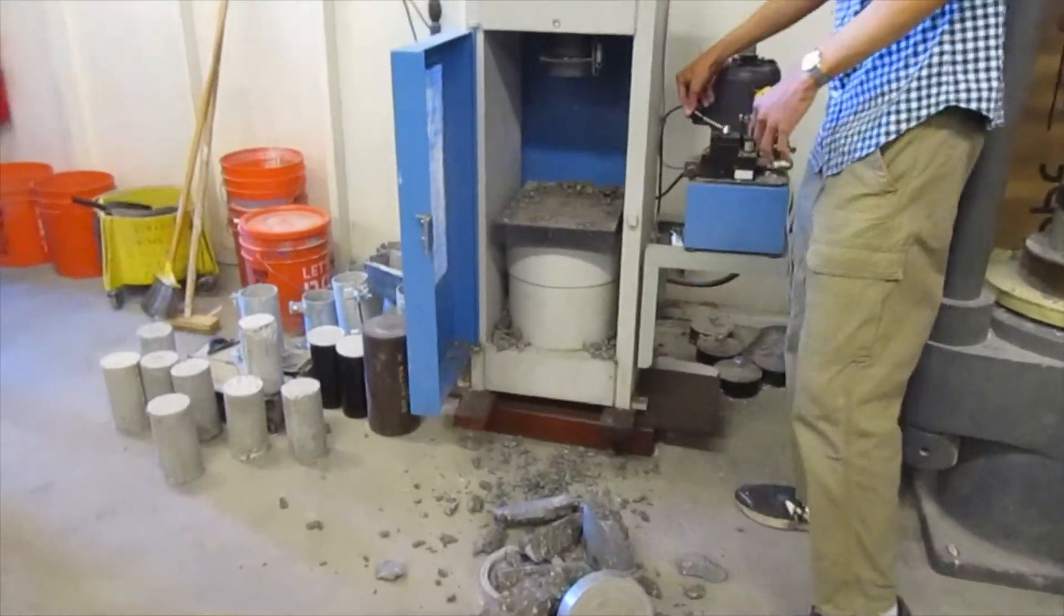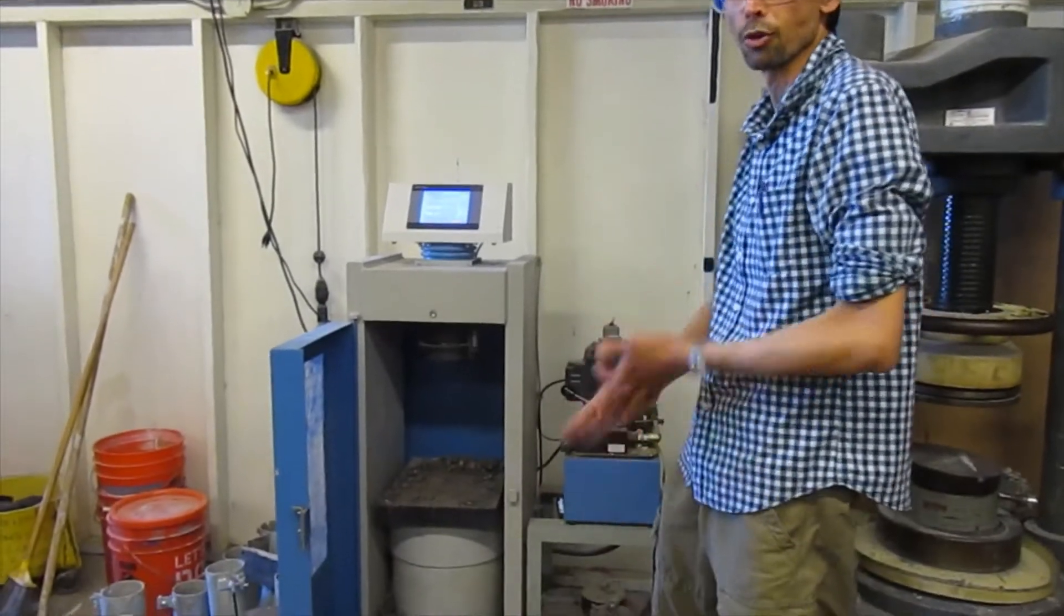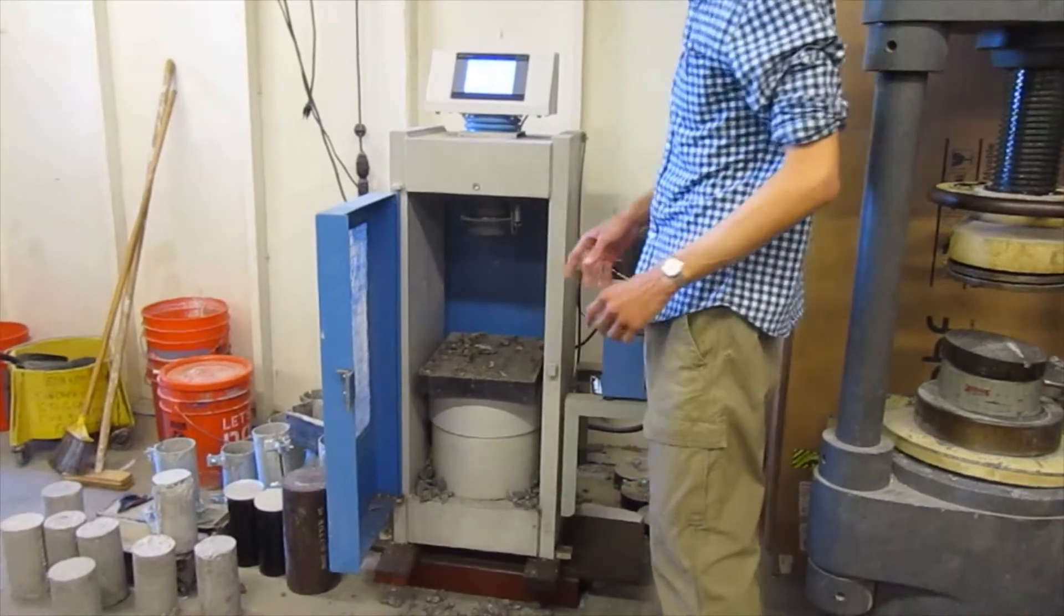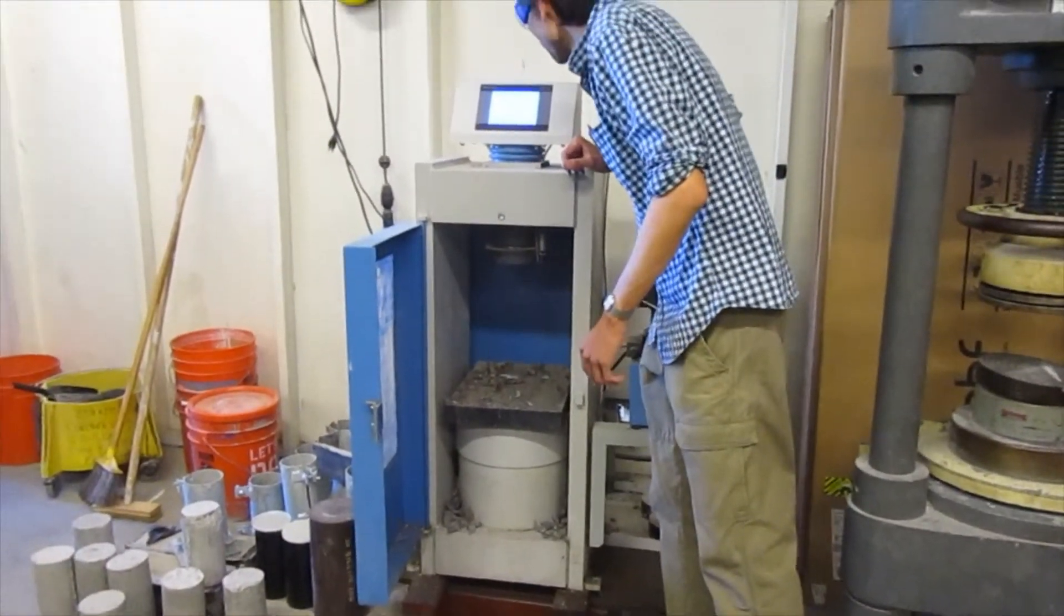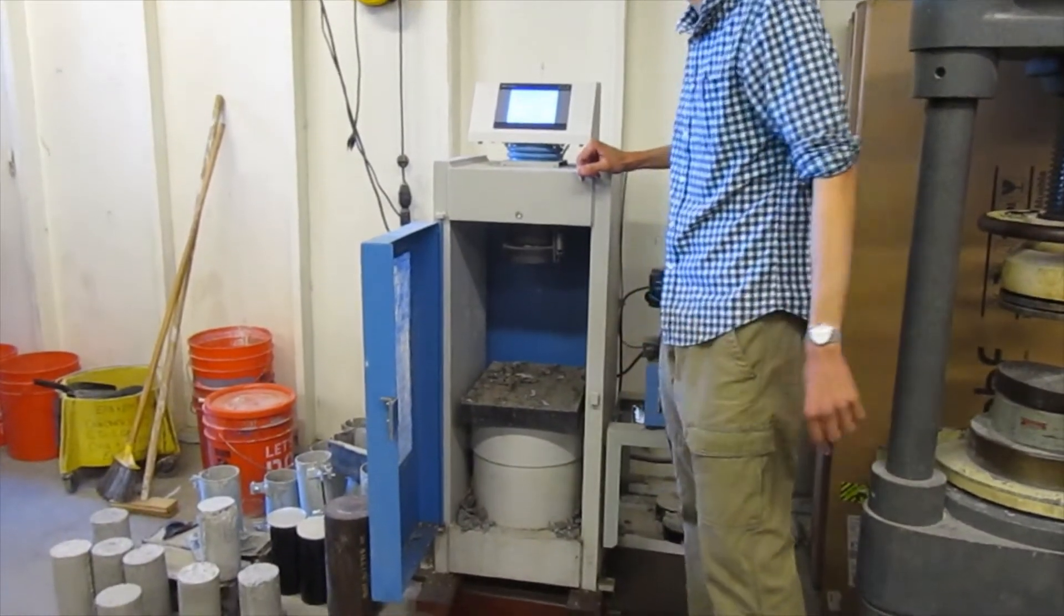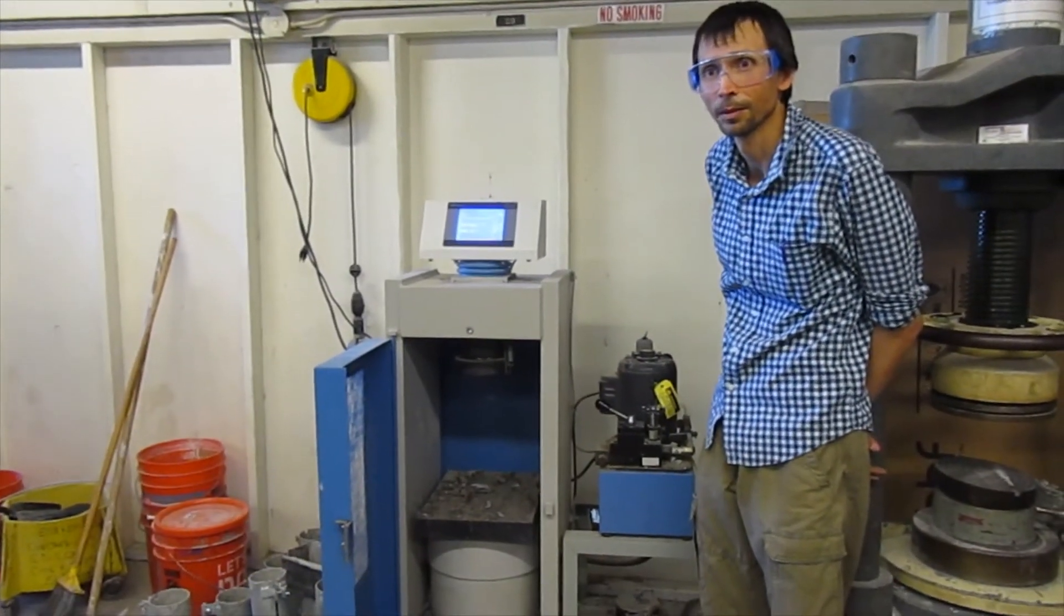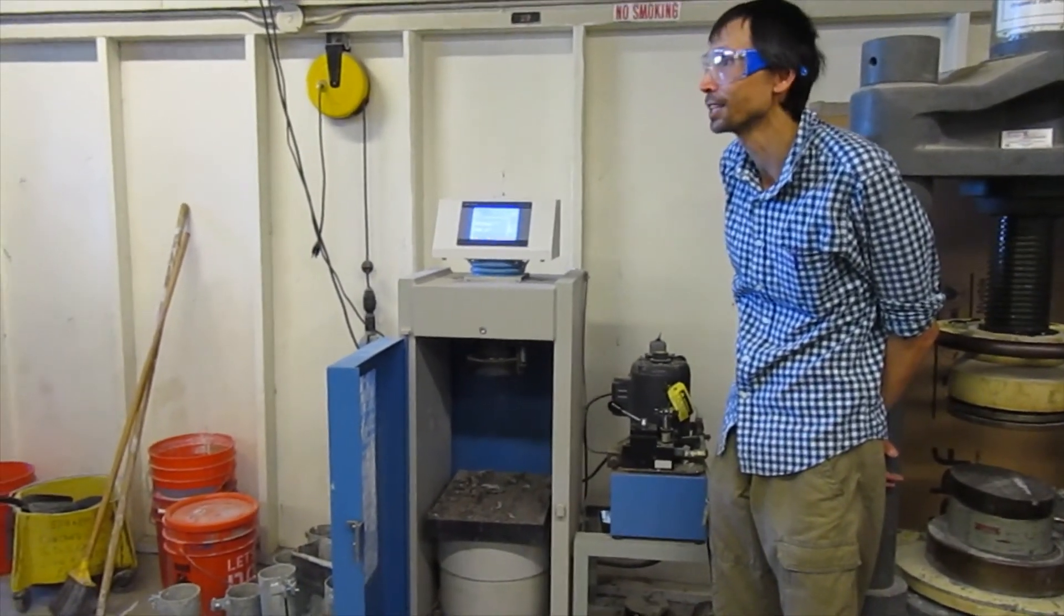If I just turn it off, the bottom ram continues to drop on its own. I don't necessarily have to keep that going. So if you're writing this down, 101,566 pounds. So that's the failure. How many kips is that? 101.566 kips.